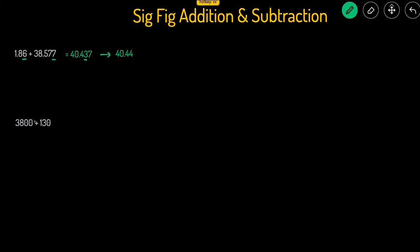Okay, this next one, this one's a little challenging. Let's line this one up. So 3,800 plus 130. Let's start by just adding those together: 3,930. Then let's underline the last sig fig.